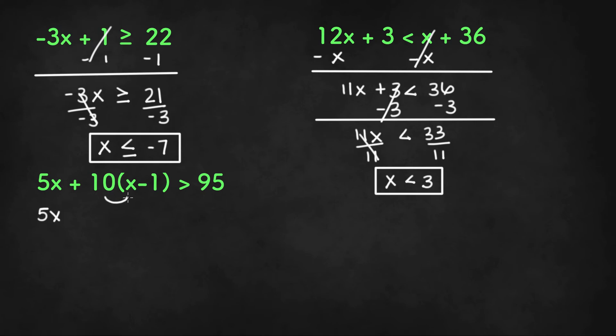Distribute the 10 to x, so plus 10x, and distribute the 10 to negative 1 minus 10 is greater than 95. Now we can combine like terms, so we'll have 15x minus 10 is greater than 95.